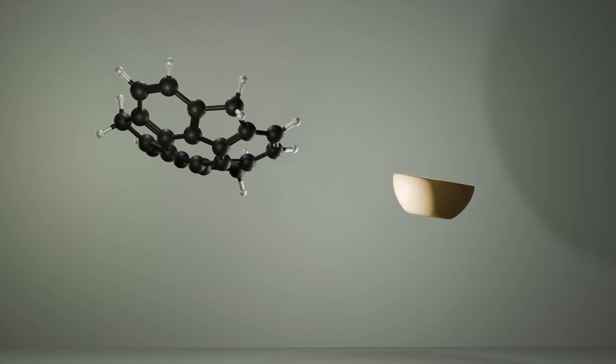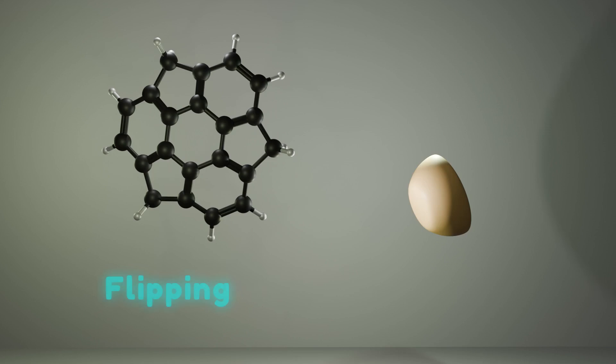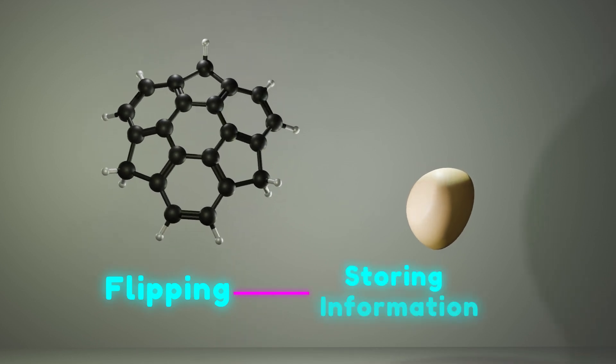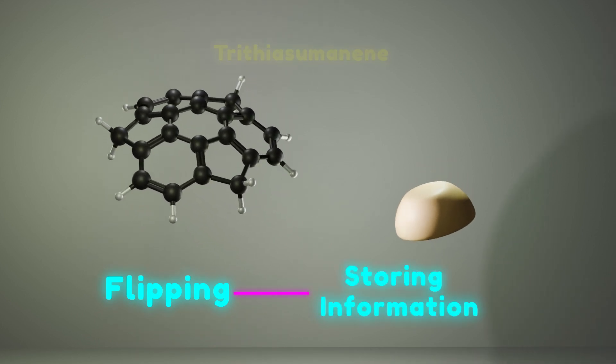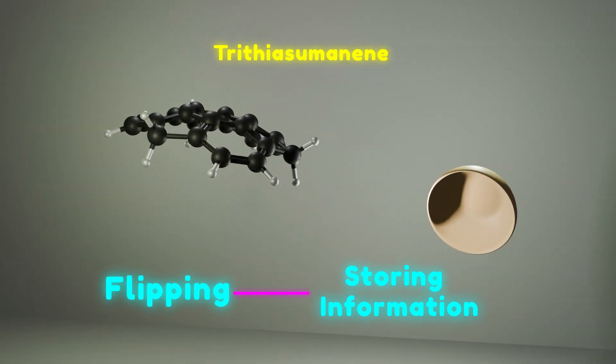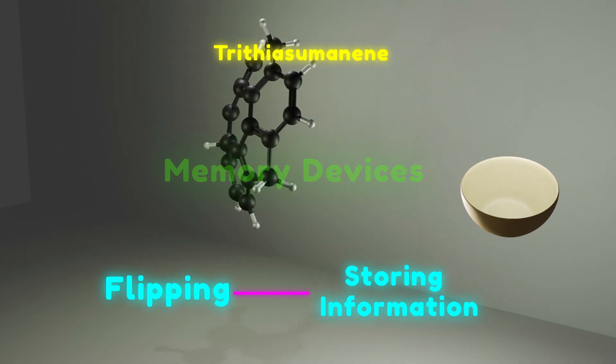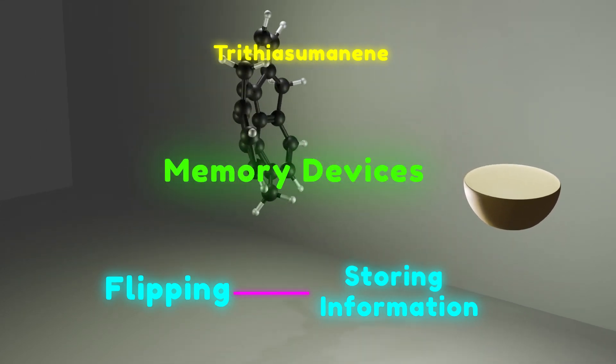Today I want to show you one of the strangest molecules you've ever seen. What if a molecule could move, flip itself inside out and store information like a computer chip? Trithiasumanene is a bizarre ball-shaped structure with a unique dynamic behavior that makes it a perfect candidate for the next generation of memory devices. But how is that even possible?